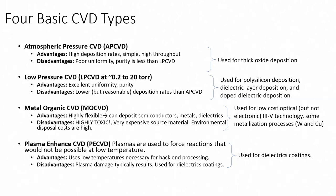LP-CVD operates at 0.2 to 20 torr. Its advantages are excellent uniformity and purity. Disadvantages are a lower, but reasonable, deposition rate compared to AP-CVD. LP-CVD is used for polysilicon deposition, dielectric layer deposition, and doped dielectric deposition.